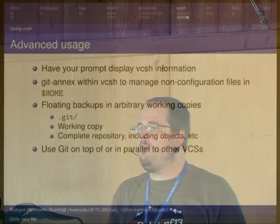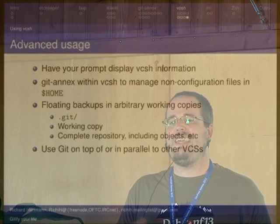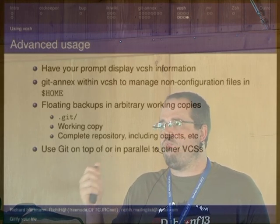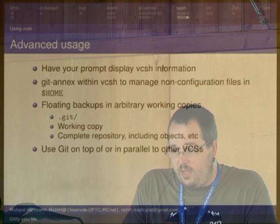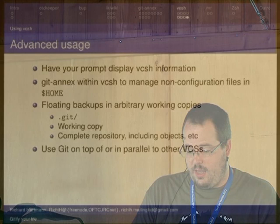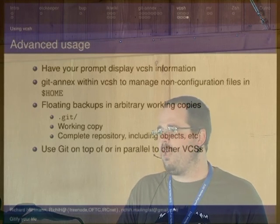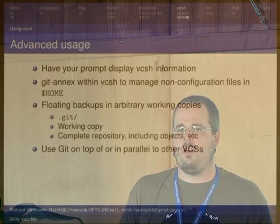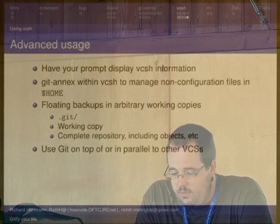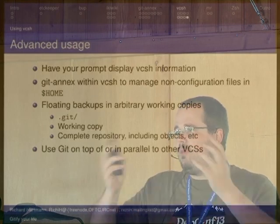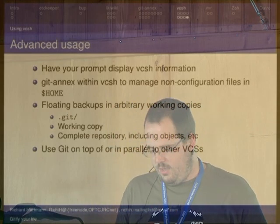An advanced use case which will be possible quite soon is combining vcsh and git-annex to manage everything in your home directory — configuration files with vcsh and everything else with git-annex — so you have basically two programs to sync everything about your entire home directory without any extra work. You can also do really weird stuff, for example backing up the .git of a different repository with vcsh, or backing up a working copy maintained by a different system.